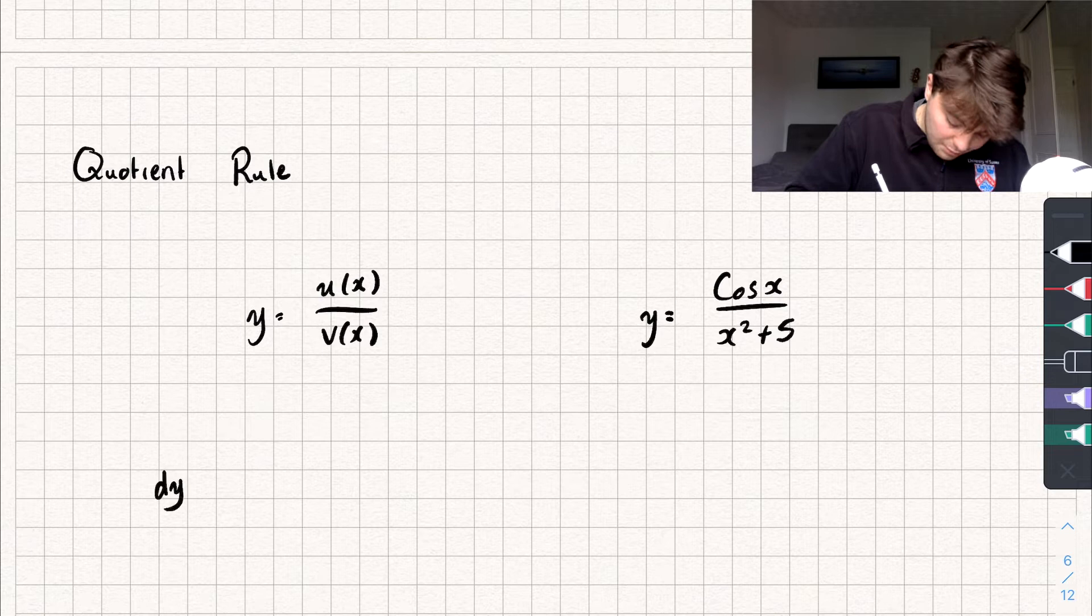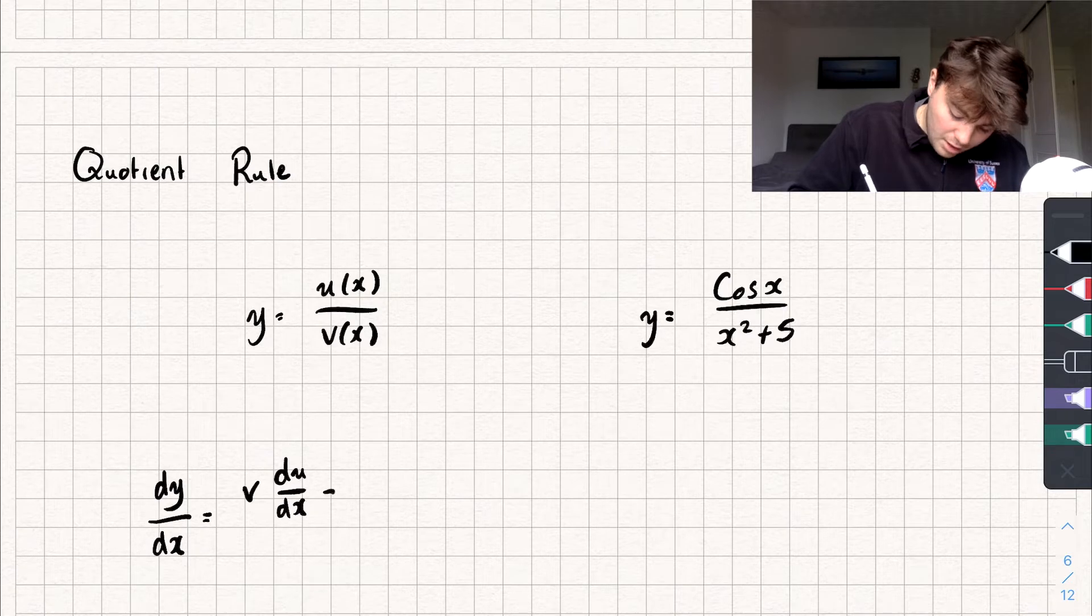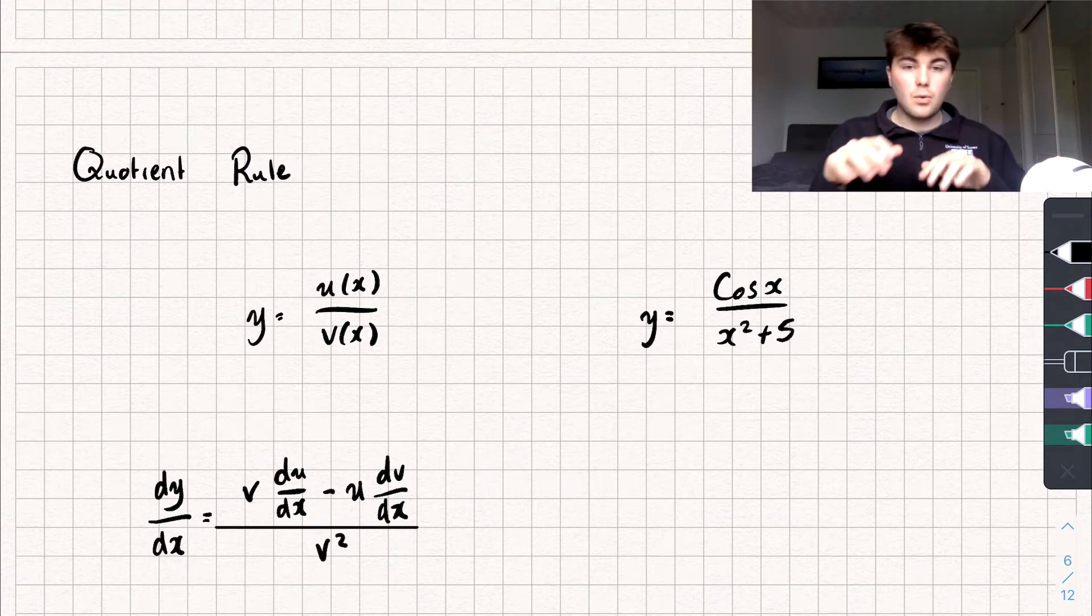So the quotient rule says that the derivative of this, dy/dx, is going to be equal to function v multiplied by the derivative of function u, subtract function u multiplied by the derivative of function v, and then all of that is divided by the function v squared.